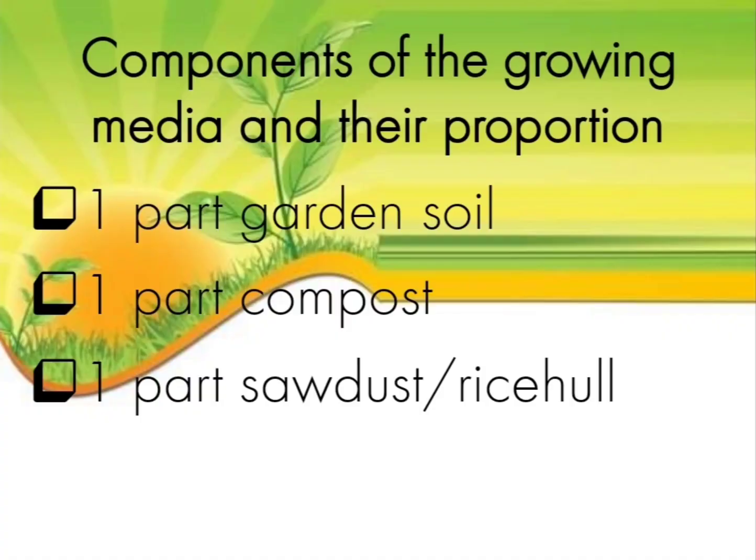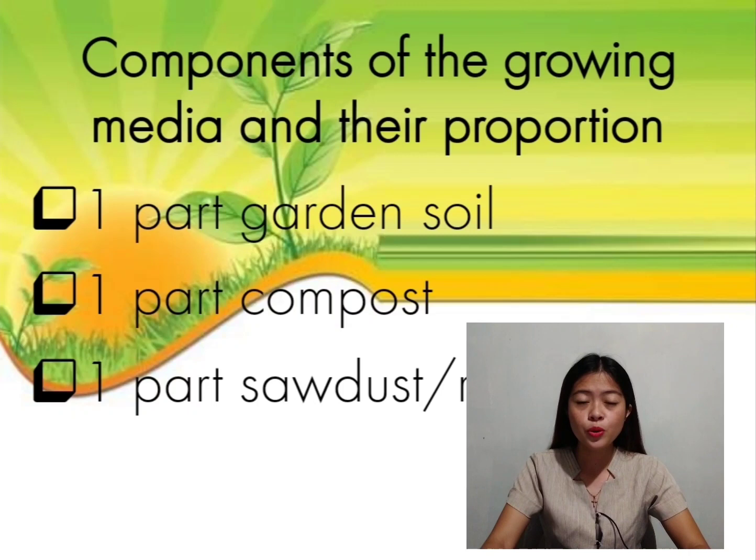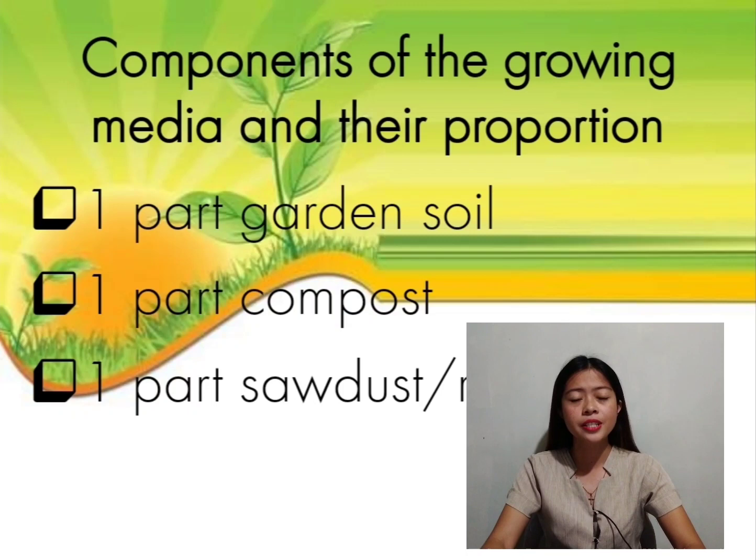Let's get to know the components of the growing media and their proportion. We have here garden soil, compost, sawdust, and rice hull. These are the materials that we are going to use later on in preparing the growing media. I will show you a video on how to do that.